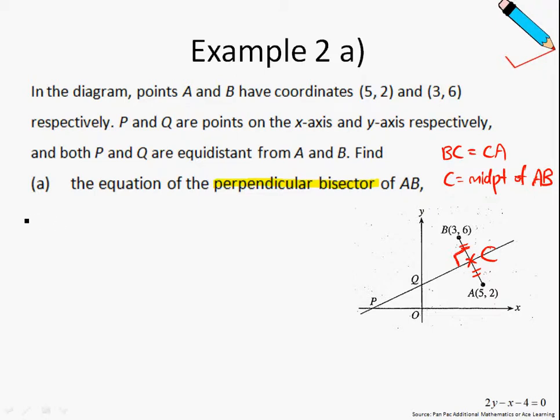So let us go ahead and find point C first. The coordinates of C is the midpoint of AB. Recall that the formula of midpoint is the x-coordinate of B plus the x-coordinate of A divided by 2, and then the y-coordinate of B plus the y-coordinate of A divided by 2. Working this out, we arrive at (4, 4).